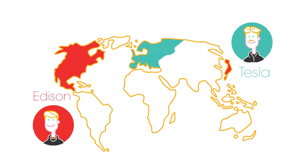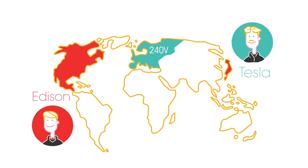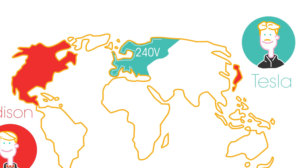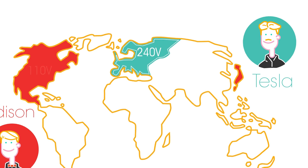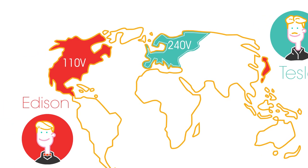Tesla preferred to use electricity at 240 volts, which allowed electricity to travel great distances without a big loss in energy. Whilst Edison preferred 110 volts, which was considered safer.